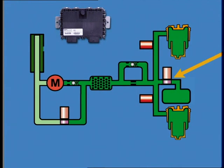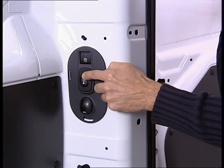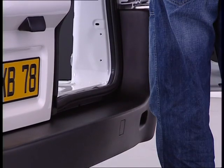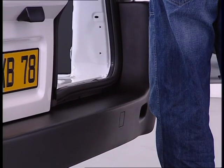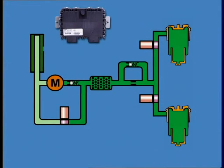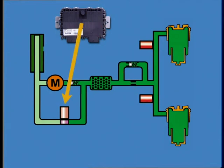The air reserve is only used for raising the vehicle in manual mode. Conversely, to lower the vehicle, the ECU opens the spring solenoids and the outlet solenoid.